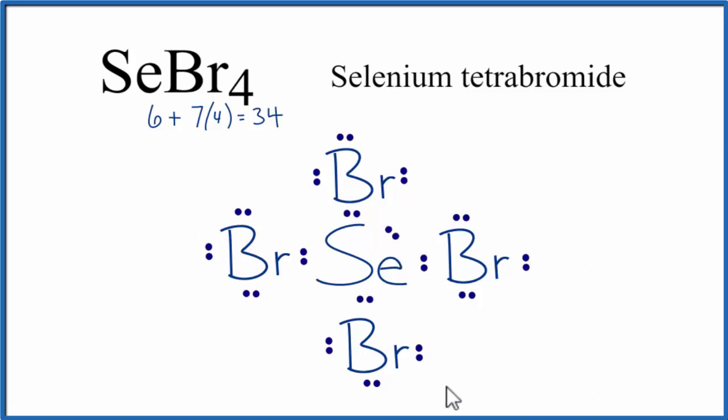If you check the formal charges for each of these atoms here in the SeBr4 Lewis structure, you'll see that the formal charges are 0. And that means this is the most favorable or likely structure for SeBr4.